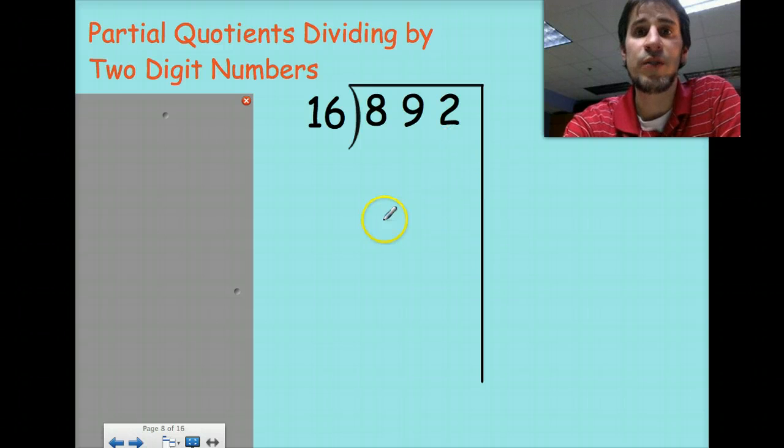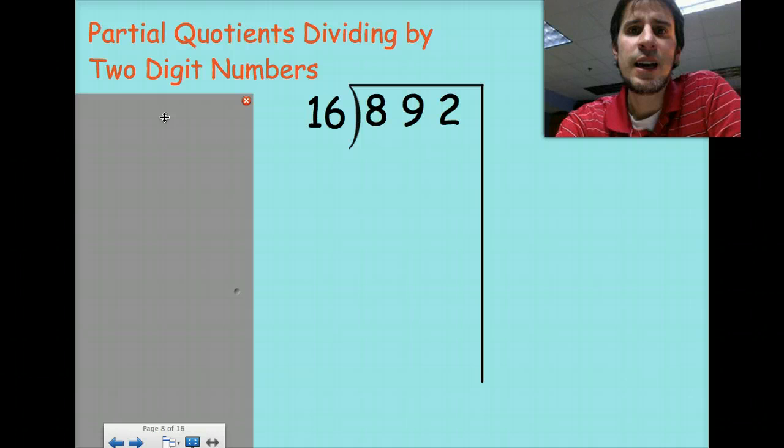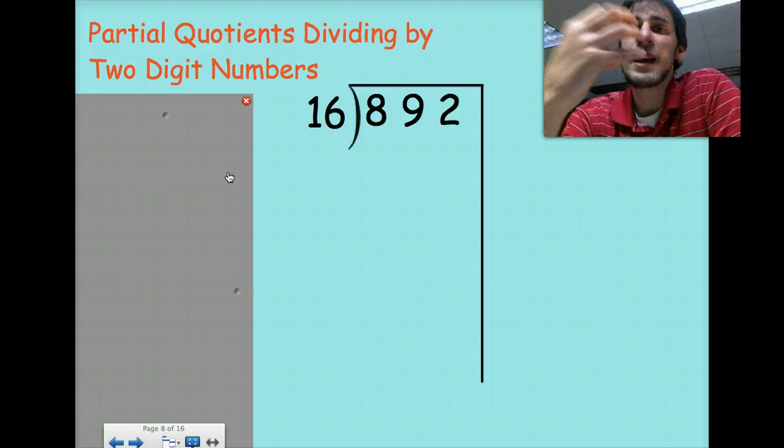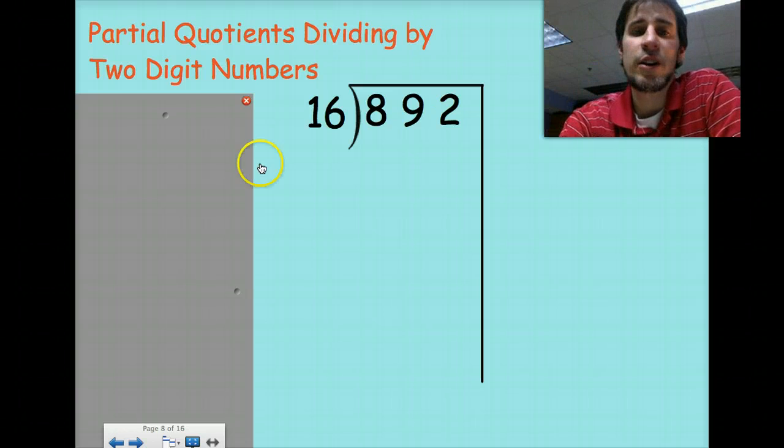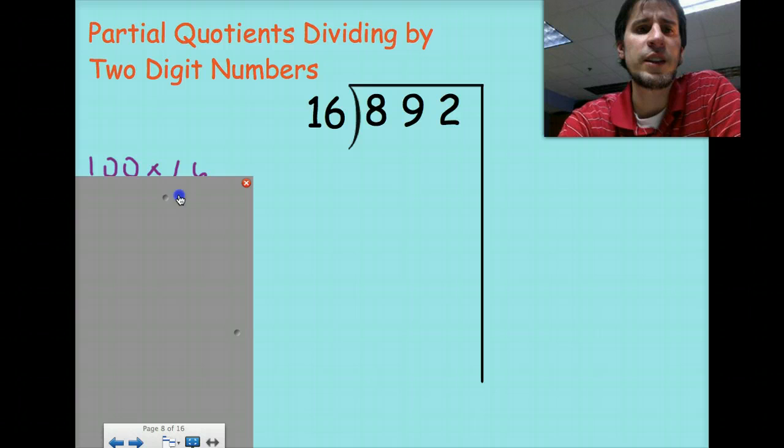So remember I talked about easy numbers, things that are friendly enough for me to plug down here and just chip it away in nice easy bite-sized pieces instead of trying to wolf down 892 in too many groups of 16 for me to figure out on my own. So let's go with those friendly numbers.